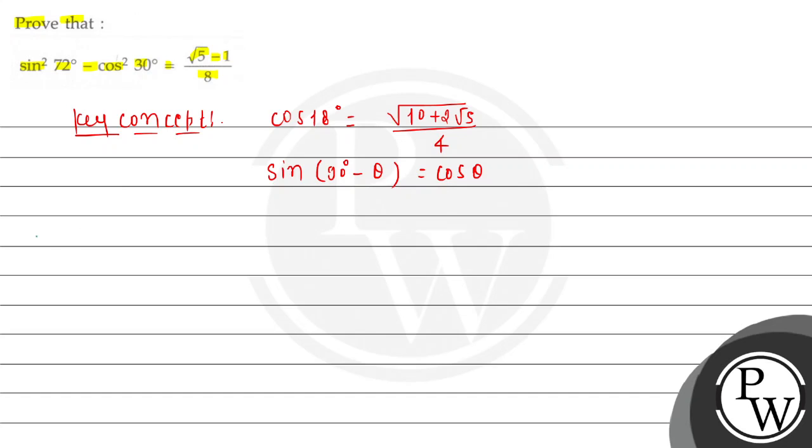Let's come to the question. In this case, we'll take LHS and then try to prove the RHS. So sin²72° - cos²30°.